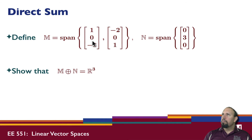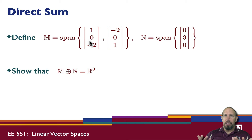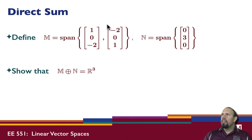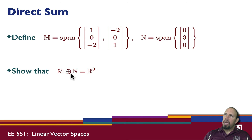What about the direct sum? M is the span of two vectors with zeros in the middle. These vectors are independent — neither is a multiple of the other. When you have two vectors, you just check if one is a multiple of the other; for three vectors you check if a combination of two equals the third. We need to show that the direct sum M ⊕ N equals all of R3 — meaning any 3D vector can be expressed as a vector in M plus a vector in N.